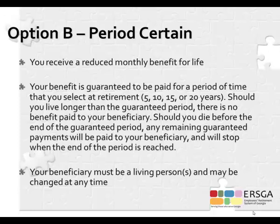Option B provides the retiree with a reduced lifetime benefit and, depending on the time period selected, a limited benefit paid to the named beneficiary. Retirees choose one of four payment periods: 5-year, 10-year, 15-year, or 20-year. If the retiree dies before the end of the chosen period, the beneficiary assumes those payments for the remainder of the period; once the period ends, payments cease. If the retiree lives longer than the period, no benefits are paid to the beneficiary. The beneficiary must be a living person but may be changed at any time after the first monthly payment.